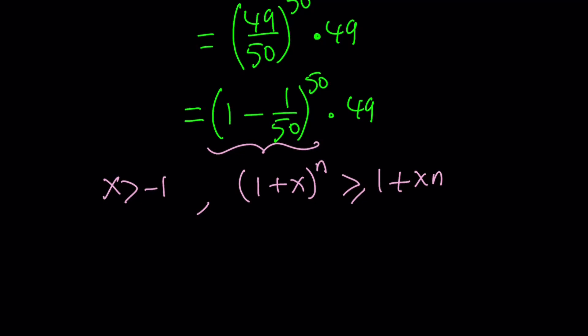I'm going to write this as 1 minus 1 over 50. Since I have the 50th power, I'll write it as to the 25th power and then raise it to the 2nd power. This can be written as follows. If you think about negative 1 over 50, that number is greater than negative 1 because it's between negative 1 and 0. So that's the x value I'm going to use.